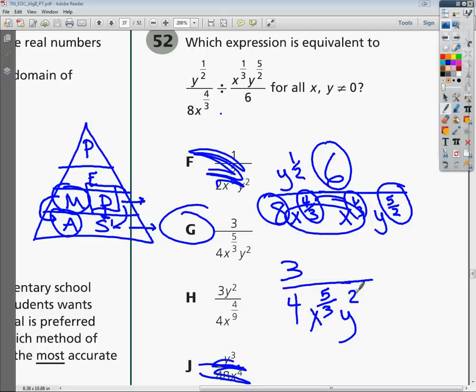So 4 thirds and 1 third gives you 5 thirds. 5 over 2 is bigger than 1 over 2. So subtract and put the 2 on the bottom. Gives you your answer, which is, of course, G. So good luck on this one. It's not really that complicated. It's kind of an algebra 1 thing, but the fractions can be a little bit weird.